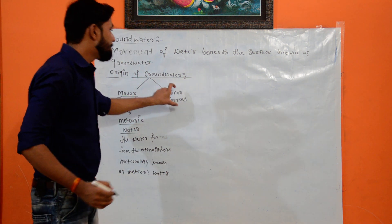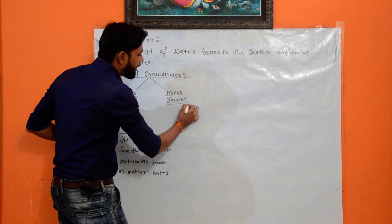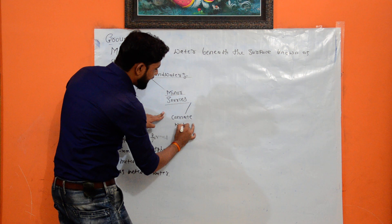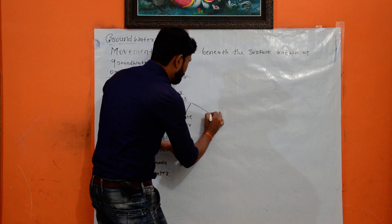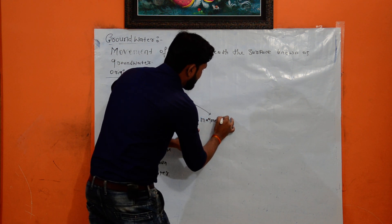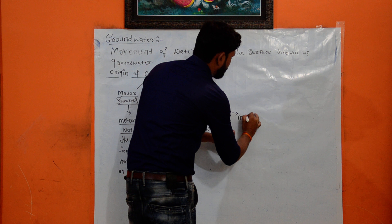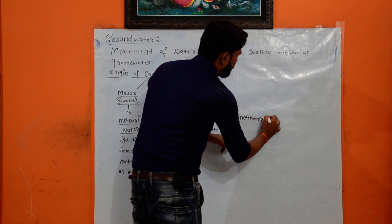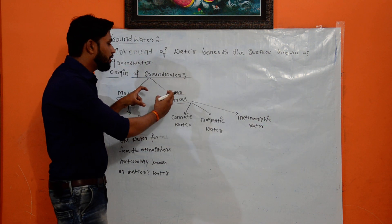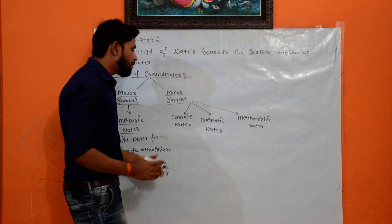Then, minor sources. In minor sources of groundwater, the water is bifurcated into number one, the connate water; number two, the magmatic water; and number three, the metamorphic water.